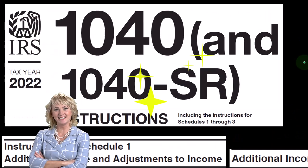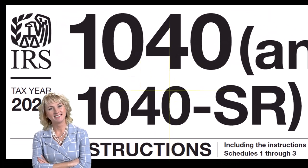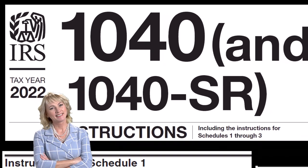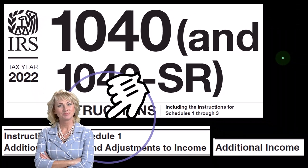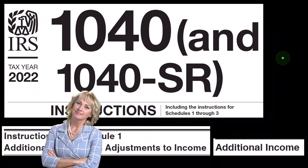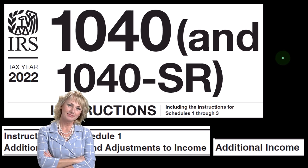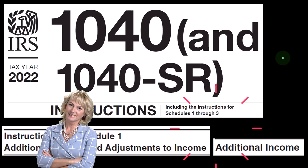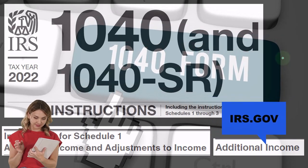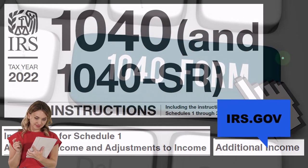Most of this information comes from the Form 1040 instructions, tax year 2022, instructions for Schedule 1 — additional income and adjustments to income — which you can find at the IRS website, irs.gov.